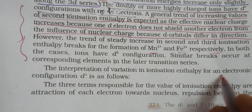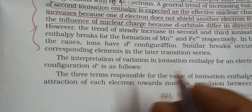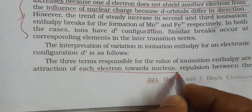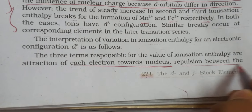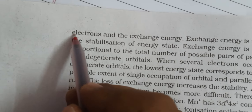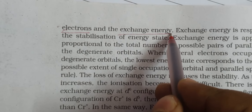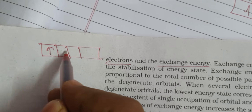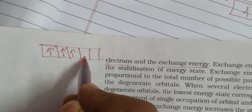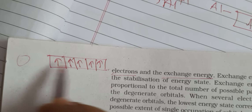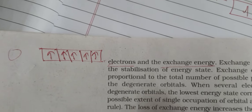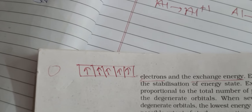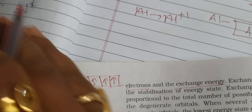The interpretation of variation in ionization enthalpy for an electronic configuration dⁿ is as follows. The three terms responsible for the value of ionization enthalpy are: attraction of each electron towards the nucleus, repulsion between the electrons, and exchange energy. If attraction increases, ionization enthalpy increases. If repulsion between electrons increases, ionization enthalpy decreases. Repulsion means shielding effect — if it increases, removal becomes easier.